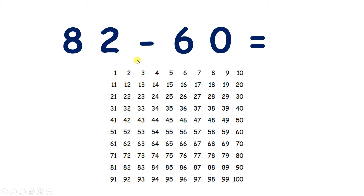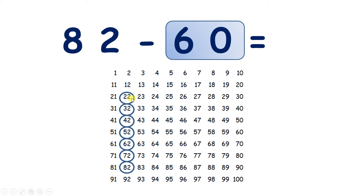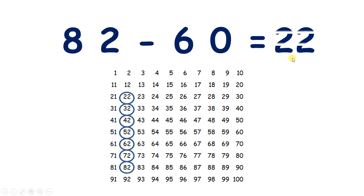So we have 82 minus 60 on our hundred square. We can find 82. We're subtracting 60, which is 6 tens, so we need to move up 6 places on our hundred square. So let's move up 1, 2, 3, 4, 5, 6 places, which takes us to 22. So 82 minus 60 equals 22.